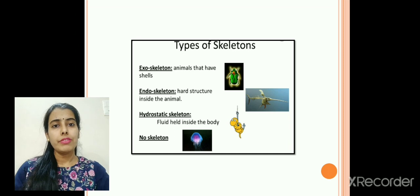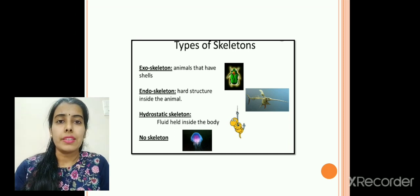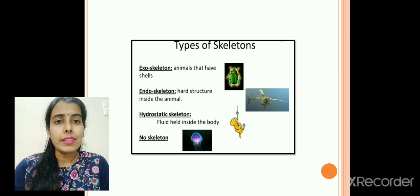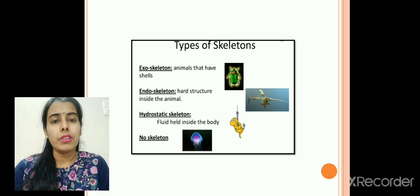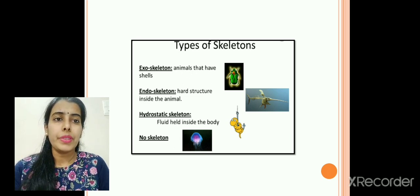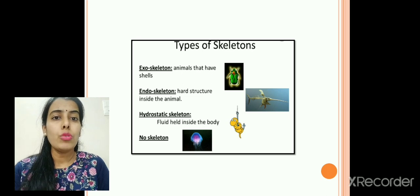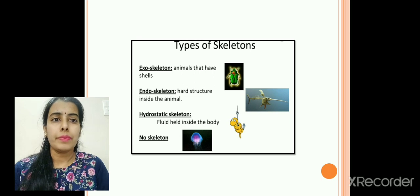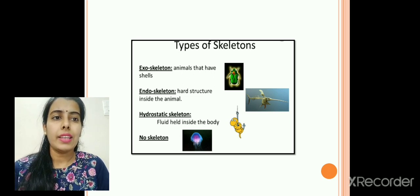To start with, we will discuss the different types of skeleton. There are three types of skeleton. First of all, what is a skeleton? Skeleton is a framework which provides support to the organism. First is exoskeleton — it is the skeleton which is present outside the animal. These animals have shells; they don't have bones. Endoskeleton is the hard structure present inside the animals.